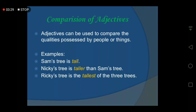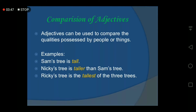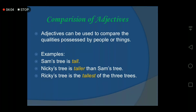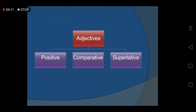For example: 'Sam's tree is tall. Nikki's tree is taller than Sam's tree. Ricky's tree is the tallest of the three trees.' Here 'tall', 'taller', and 'tallest' are three adjective forms used in three different sentences, each conveying a different meaning. Adjectives have three forms or degrees: positive, comparative, and superlative. Let us discuss these three briefly.